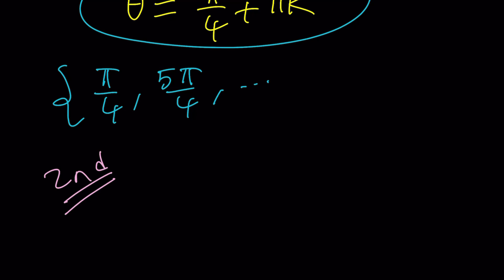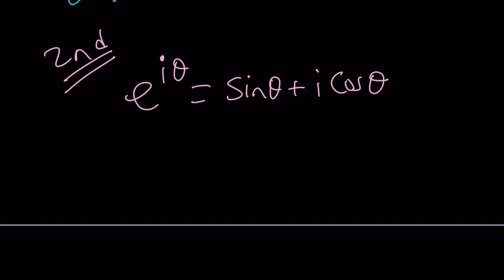We were given the following equation: e to the i theta equals sine theta plus i cosine theta. If somebody saw this problem, they would probably think like, hey, they have a typo. Aren't they supposed to switch around? Yes and no, depends. Because the left-hand side is cosine theta plus i sine theta, and the right-hand side is what it is, which is sine theta plus i cosine theta. What does that mean?